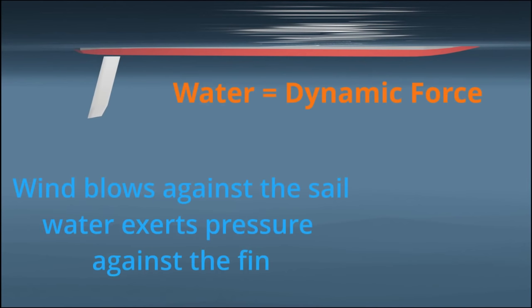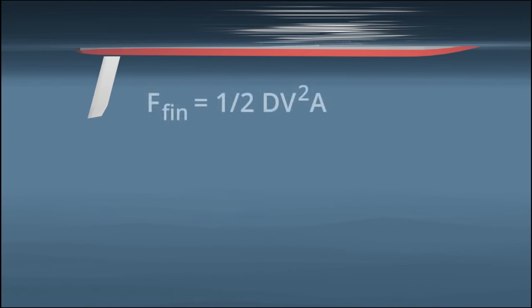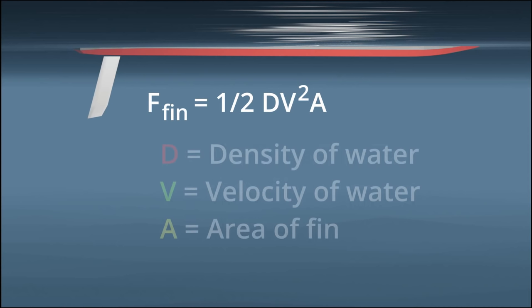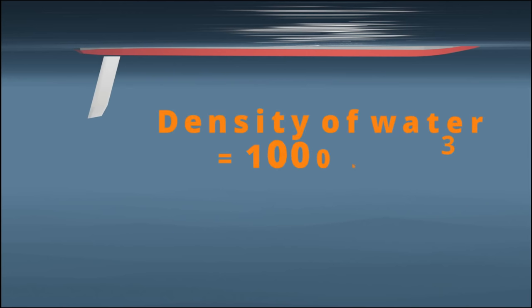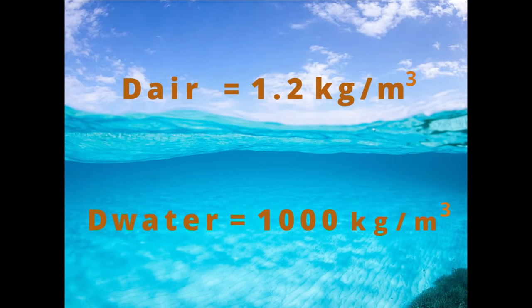Now this pressure is also a dynamic force, which can be measured with the same formula. The force on the fin equals one-half times the density of the water times the velocity of the water squared times the area of the fin. The key parameter again is the density here, and the density of the water is 1,000 kilograms per cubic meter, which is much greater than that of air.